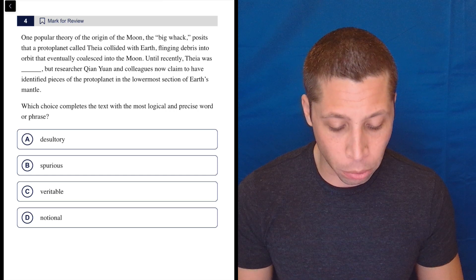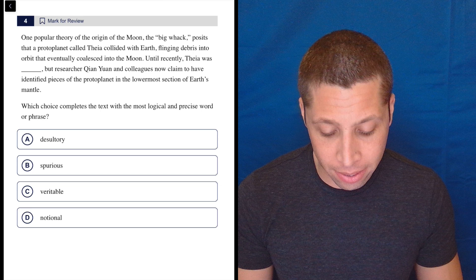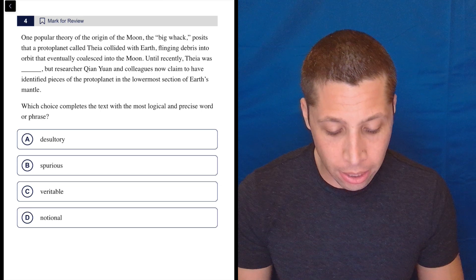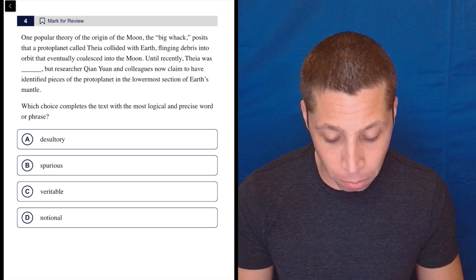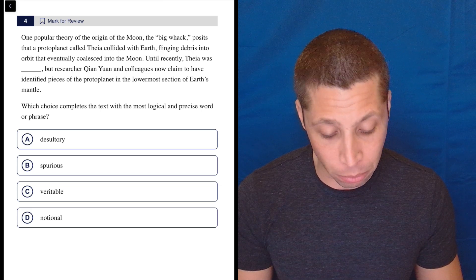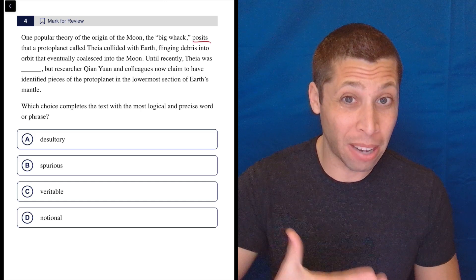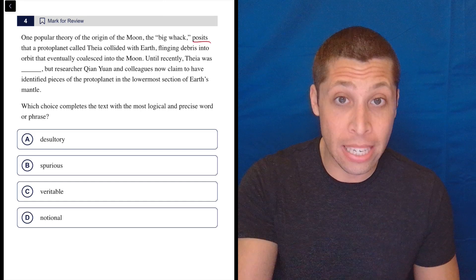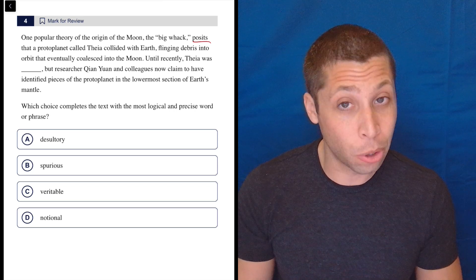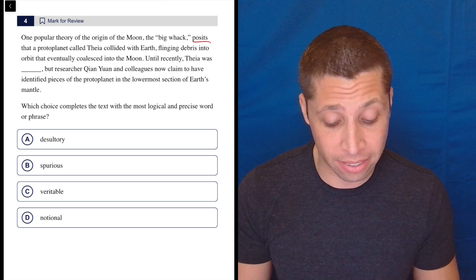So one popular theory of the origin of the moon, the big whack, posits that a protoplanet called Theia collided with Earth, flinging debris into orbit that eventually coalesced into the moon. So just as an aside, posit is a good word to know. It means kind of like hypothesize, to put forward as an idea. You're supposing something. So good word to know because there's a lot of science passages in the SAT.